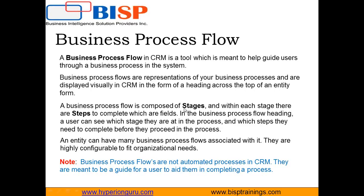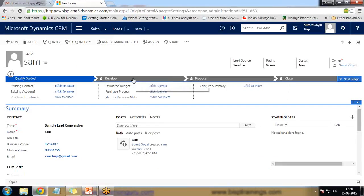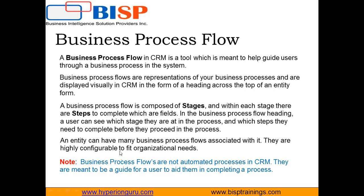A business process flow is composed of stages, and within each stage there are steps to complete, which are fields in the business process flow heading. A user can see which stage they are at and which steps they need to complete before they can proceed. An entity can have many business process flows associated with it, but you can only see and work on one business process at a time. Also note that business process flows are not automated processes in CRM like workflows — they are manual processes meant to guide a user in completing a process.